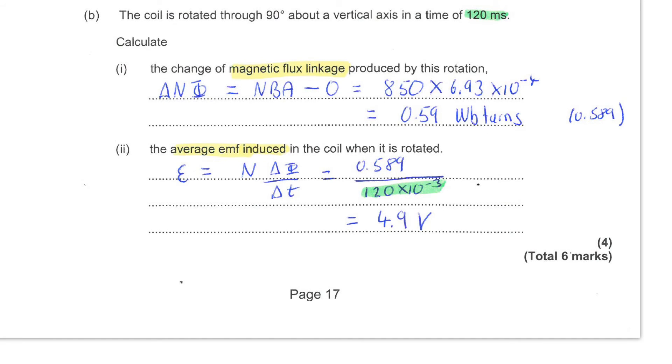Next, you're told that the coil is rotated through 90 degrees about its vertical axis in a time of 120 milliseconds. You're asked to find the change in magnetic flux linkage. The term flux linkage should draw your attention to the number of turns in the coil. You can consider each turn of the coil as linking the flux.